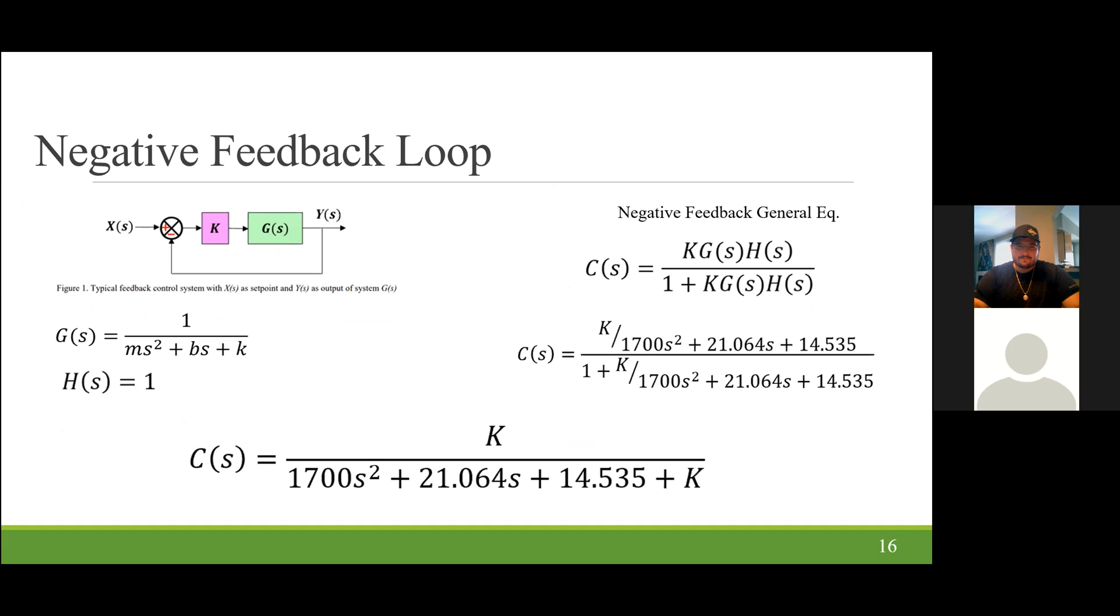From our transfer function, we start designing a negative feedback loop. This is so that we can start implementing controllers and designing controllers. Our negative feedback loop, the general equation is c of s equals k g of s times h of s, 1 plus k g of s, h of s. This is a unity function, so our h of s equals 1. And as stated before, our transfer function g of s is 1 over ms squared plus bs plus k. So plugging in our values for m as well as the equation for the general negative feedback loop, we achieve our negative feedback loop, c of s equals k over 1700 s squared plus 21.06 s plus 14.5 plus gain k.